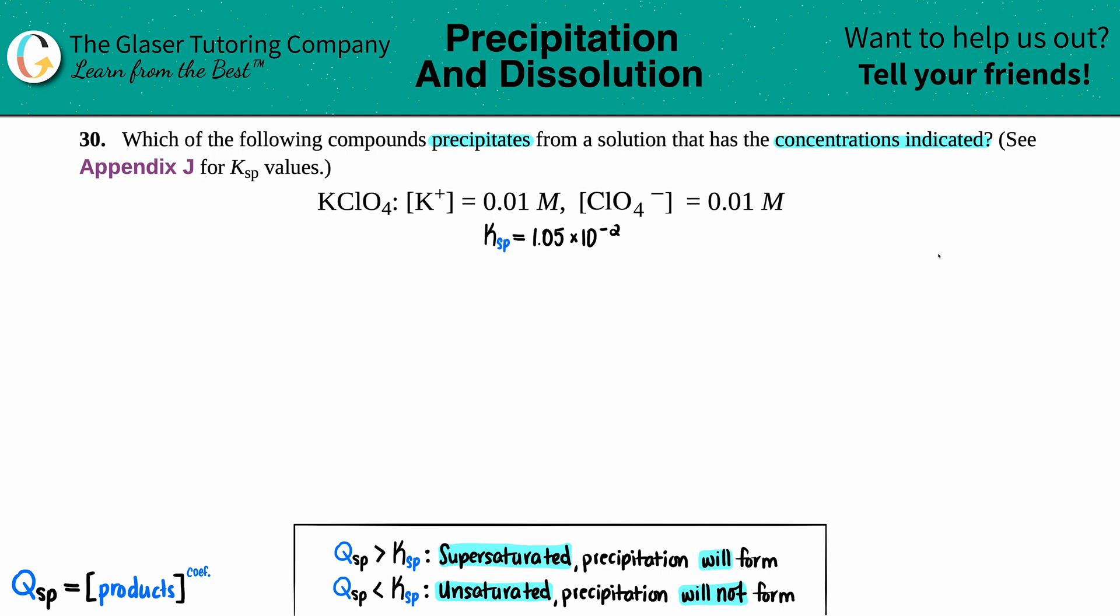So in this case, we have potassium perchlorate, KClO4, and they gave us concentrations. They told us that the K plus ion is 0.01 molarity and the perchlorate ion, the ClO4 minus, is 0.01 molarity.